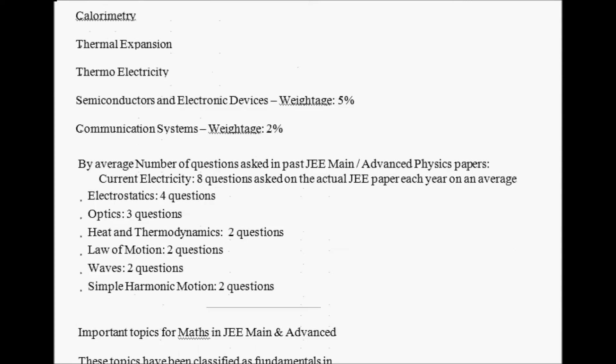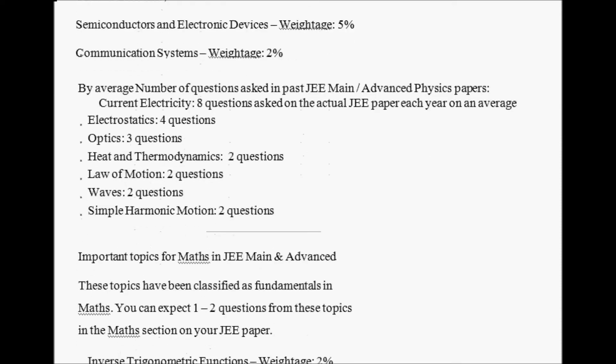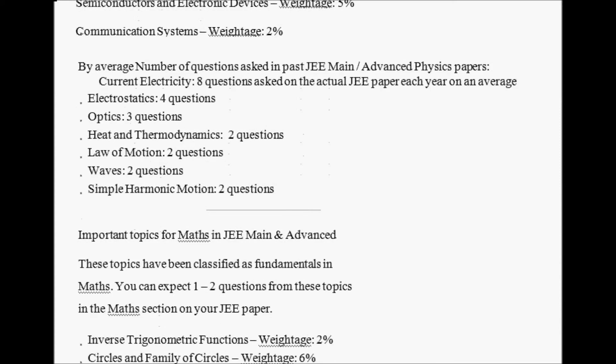Average number of questions asked in past JEE Mains Advanced previous papers: Current Electricity has 8 questions asked on the actual JEE paper each year on average. Electrostatics around 4 questions, Optics 3 questions, Heat or Thermodynamics 2 questions, Laws of Motion 2 questions, Waves 2 questions, Simple Harmonic Motion 2 questions.